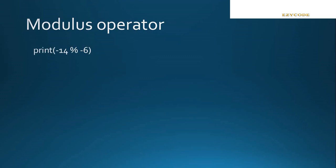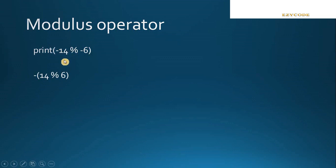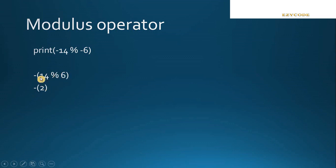Now let's see the next question: if both the numerator and denominator contain negative values, what do we do? This is a very simple technique — we only have to take the negative sign as a common factor and take it out from both numbers. Then find the remainder of 14 modulo 6, which is 2, and precede it with the negative sign. So the answer is minus 2. Hope you understand the concept of finding the remainder of negative values.